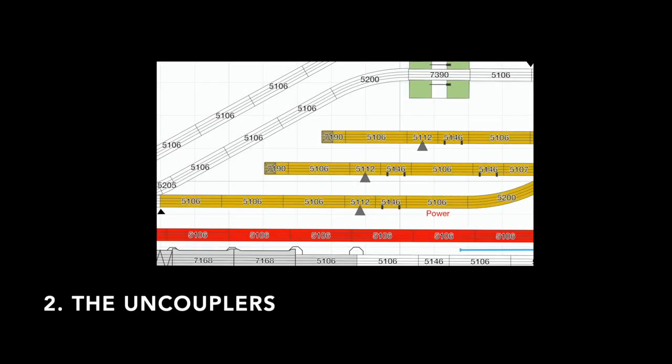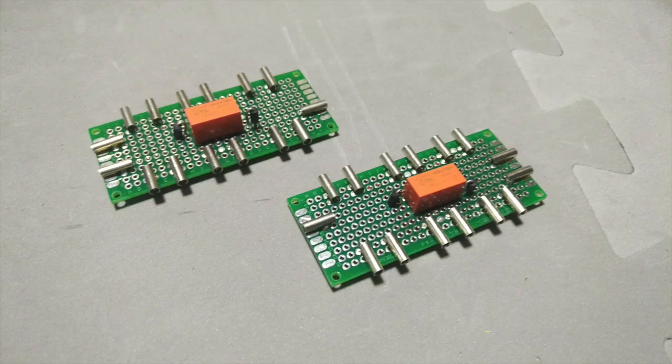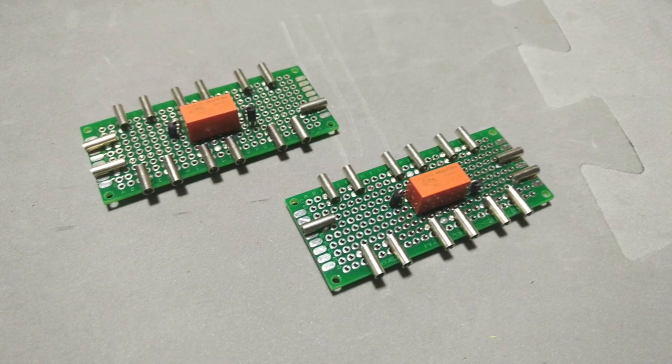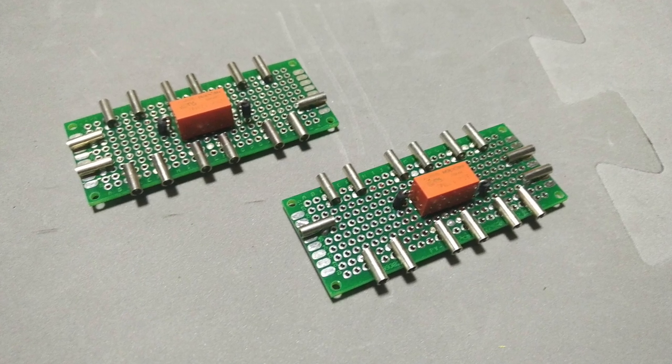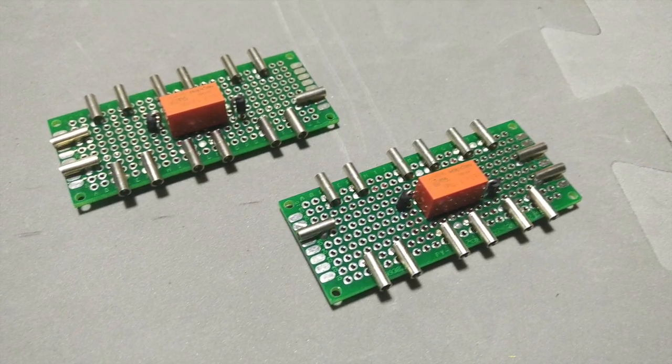Now I shall have a look at the uncouplers. They are a bit trickier. Each uncoupler will be triggered by a switching track. Now a locomotive entering a siding with a car will want to leave it there. So the uncoupler needs to be active and when a locomotive enters the siding without a car it will want to pick one up. So the uncoupler needs to be deactivated. So I need to control the current path from the switching track to the uncouplers using one of my relays.